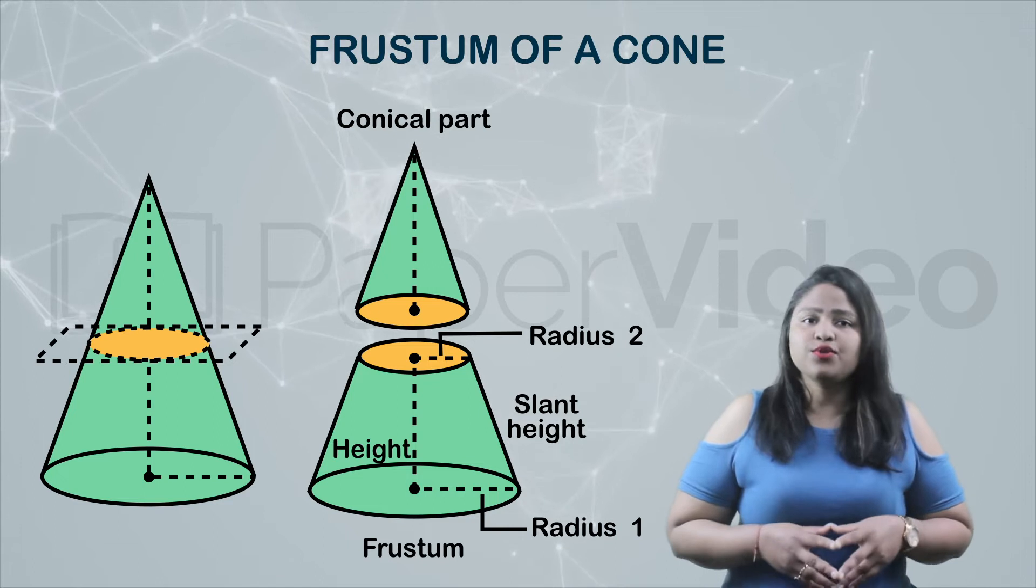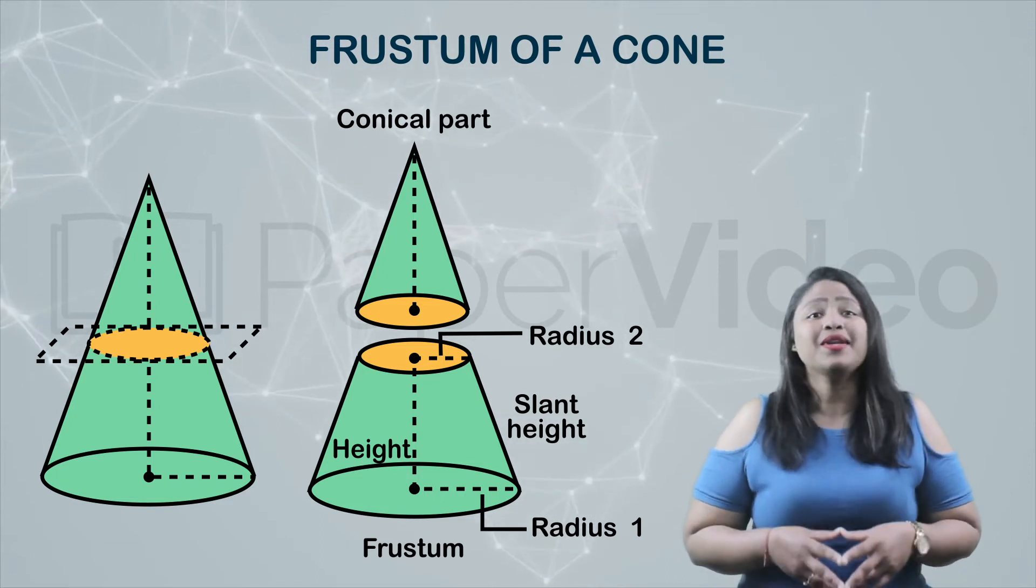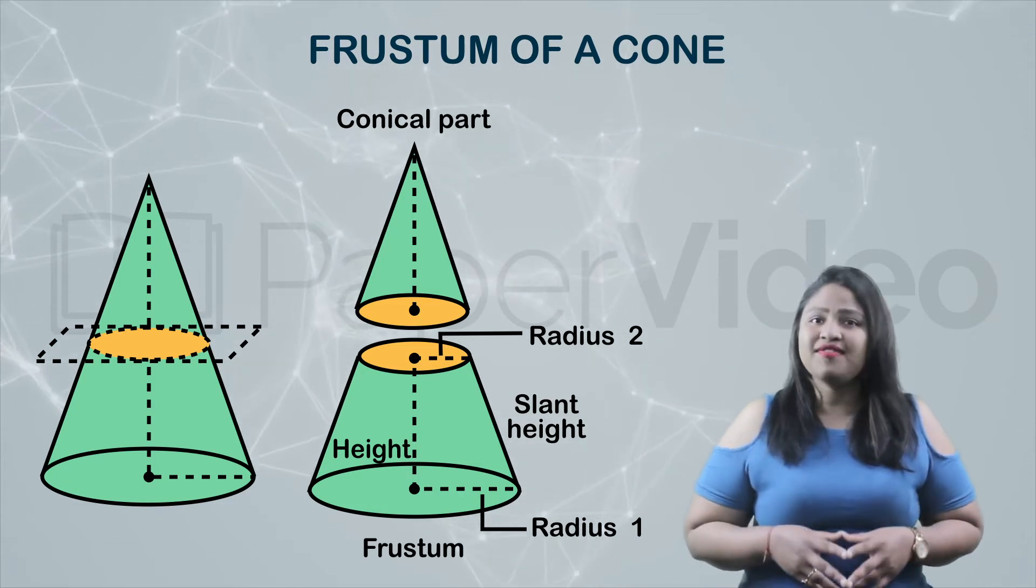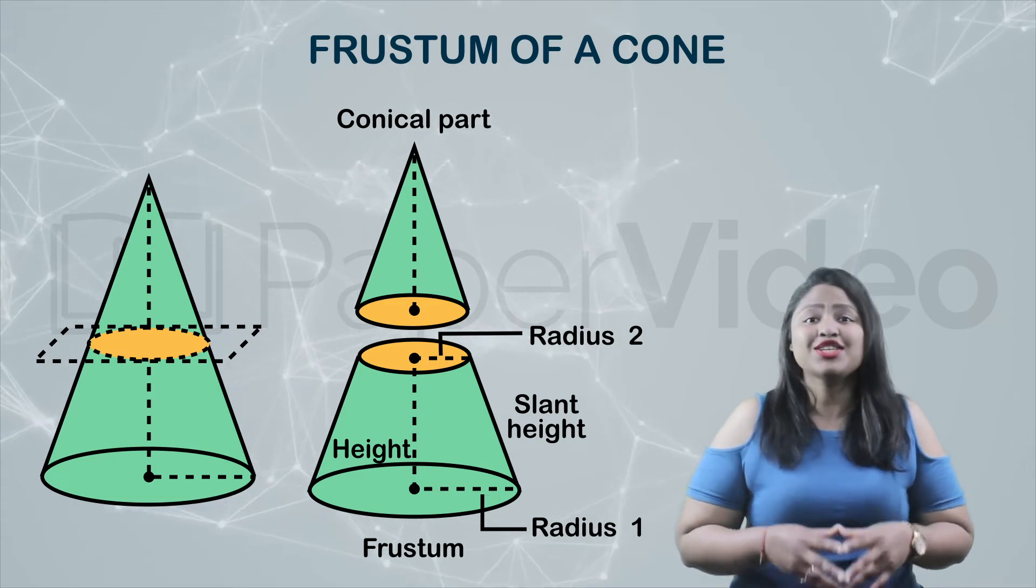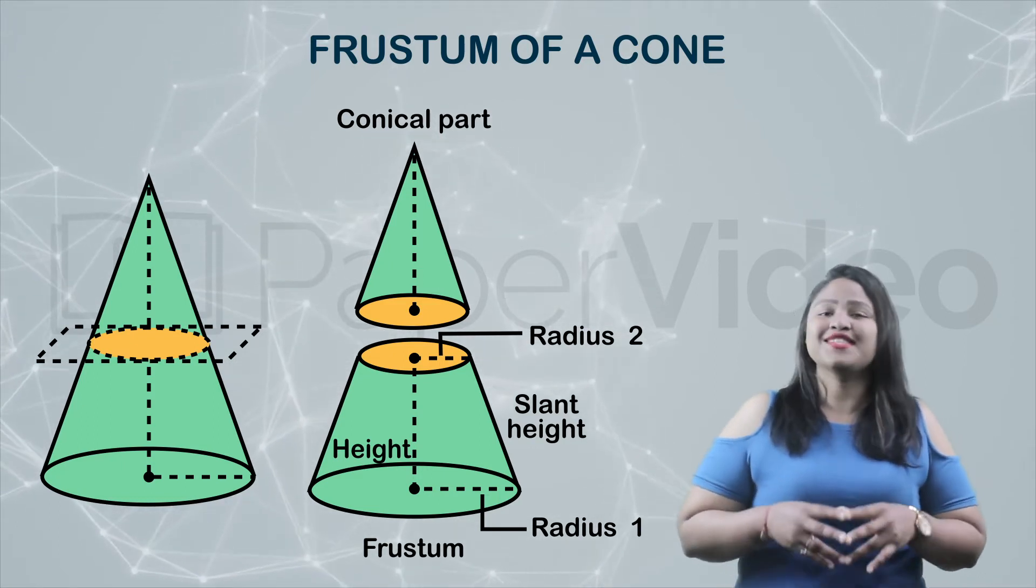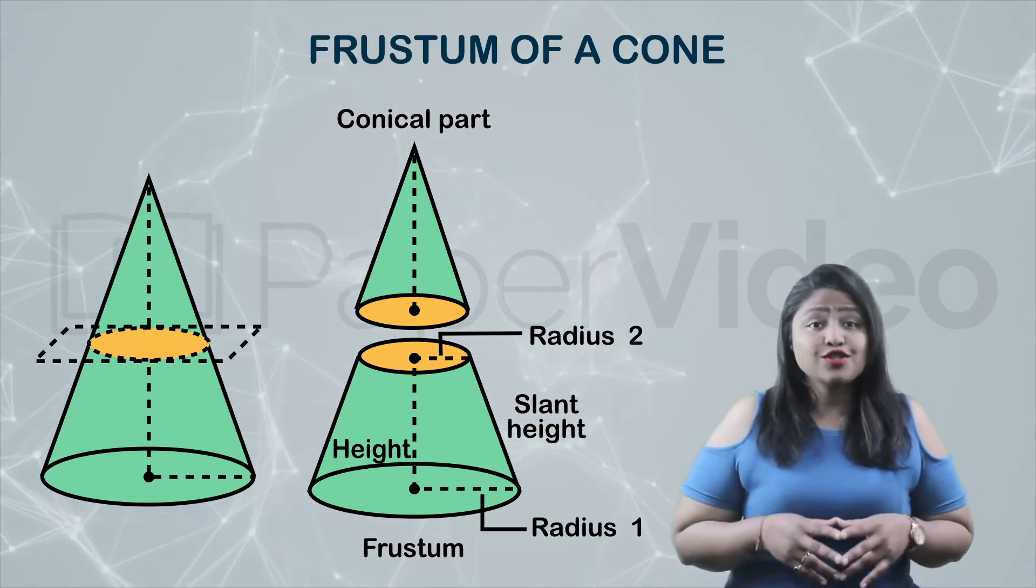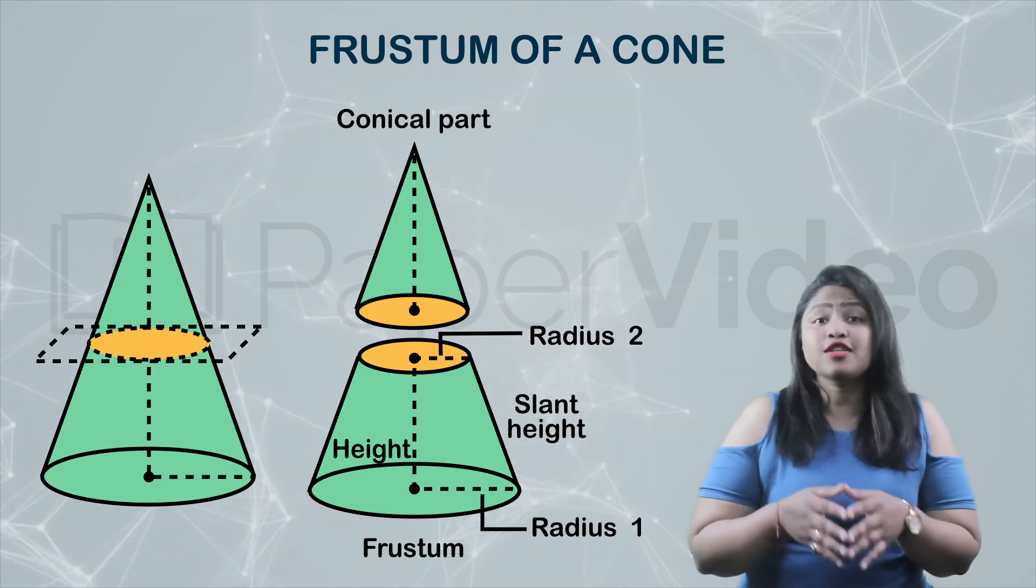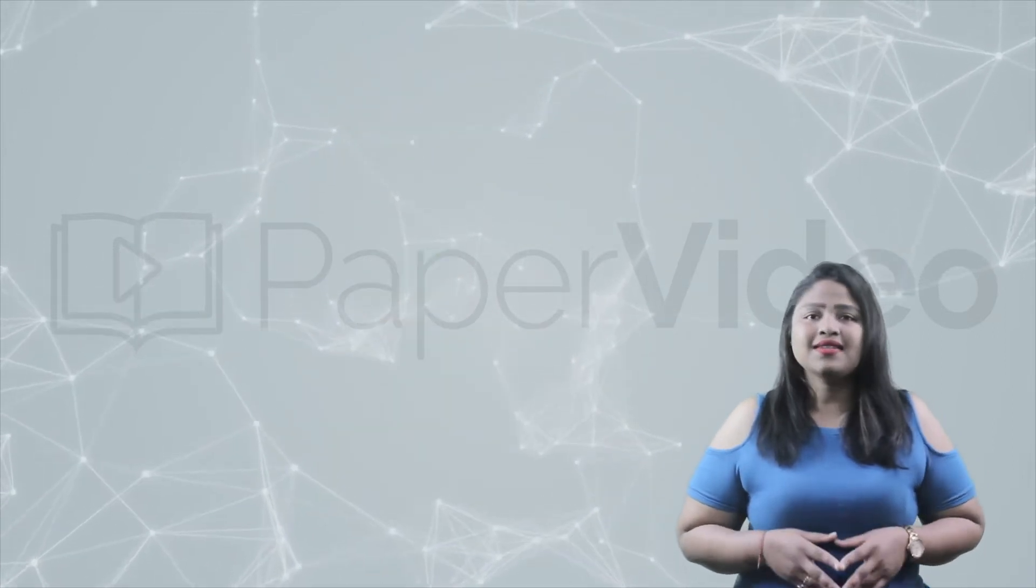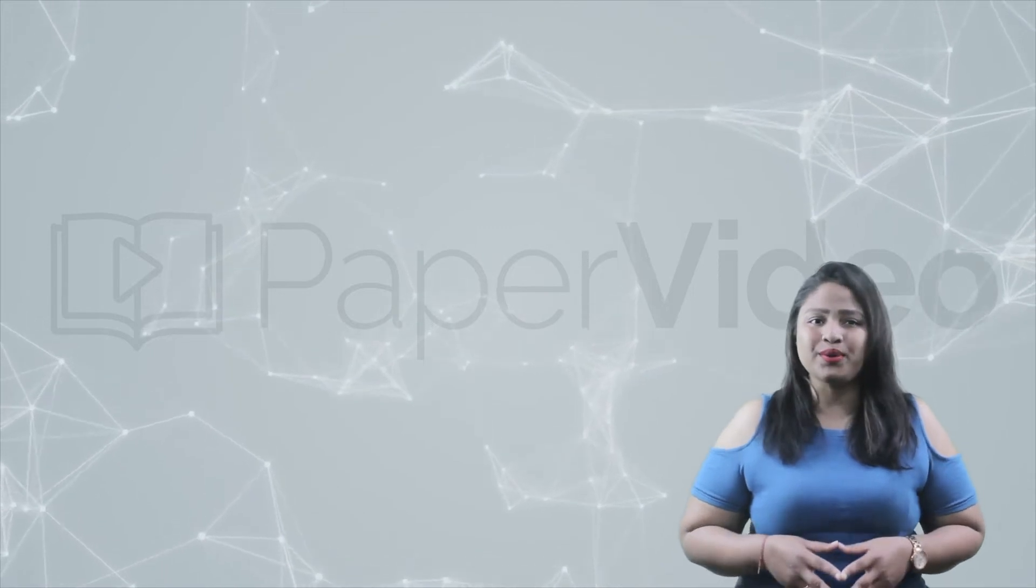There are always two different radii in a frustum of a cone and the radius of the bigger flat surface is always larger than the radius of the smaller flat surface. This three dimensional solid is known as the frustum of a cone. Now let us understand some formulas related to frustum of a cone.